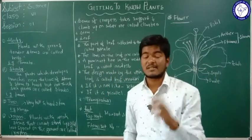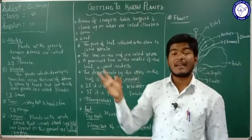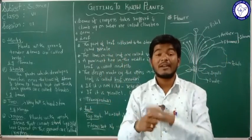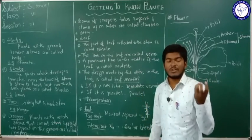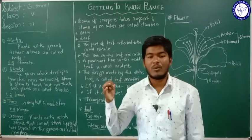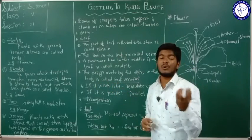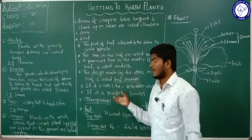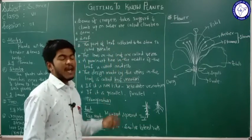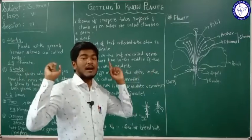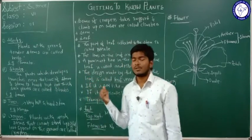Another important process that happens in the leaf is photosynthesis. In the process of photosynthesis, the leaf uses minerals, sunlight, carbon dioxide, and water to produce food. With the help of sunlight, carbon dioxide, and water, plants make food material in the leaves — this is called photosynthesis. The food prepared in the leaves is then supplied to all parts of the plant body.